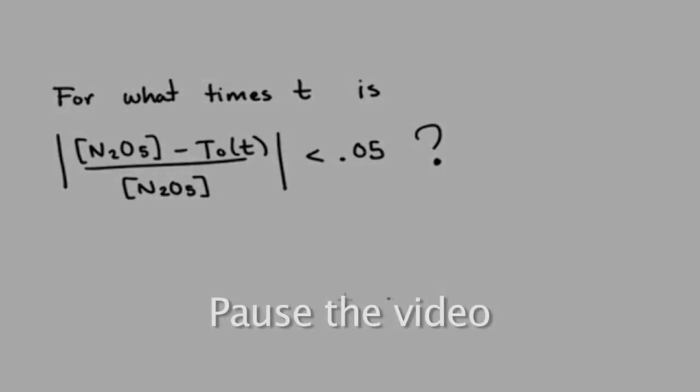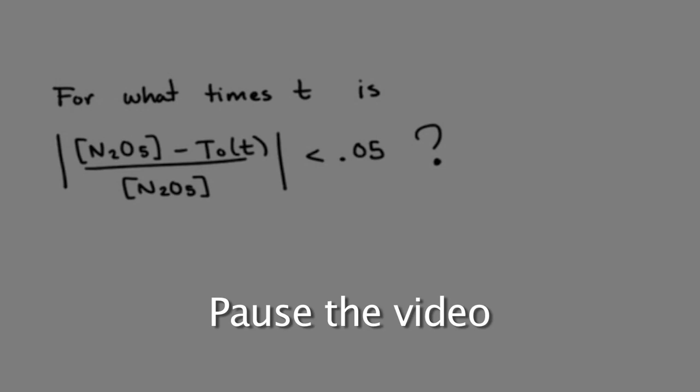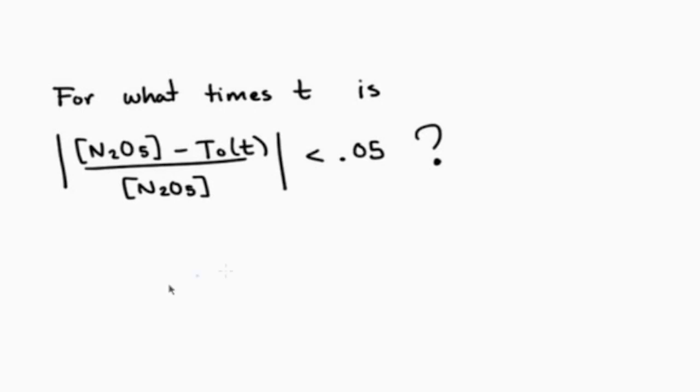But now you begin to wonder, for what times is the linear approximation at t=0 within the 5% error of the exact solution? Because we are only interested in positive time values, you should have found that the approximation is acceptable for positive times t less than 16,700 seconds, which is about 4.5 hours. Now that you've carefully examined this problem using linear approximation, it's probably time to tell your graduate student advisor that you need to order a new batch of 0.01 molar N2O5.